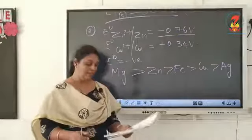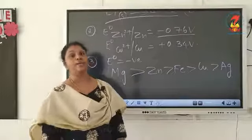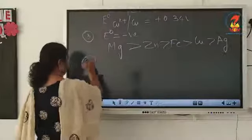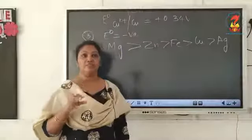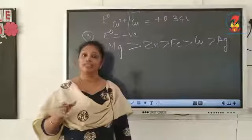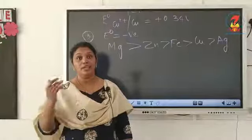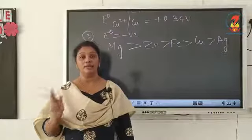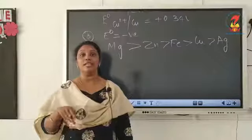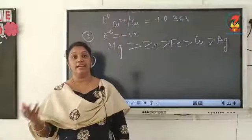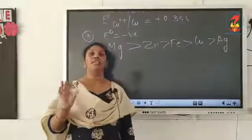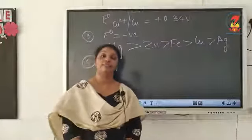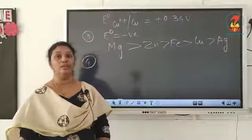The fourth application is identification of anode and cathode in a cell. When you do not know which electrode acts as anode and which as cathode, E° values are given for both electrodes. The electrode with more positive E° value acts as cathode, and the other acts as anode.